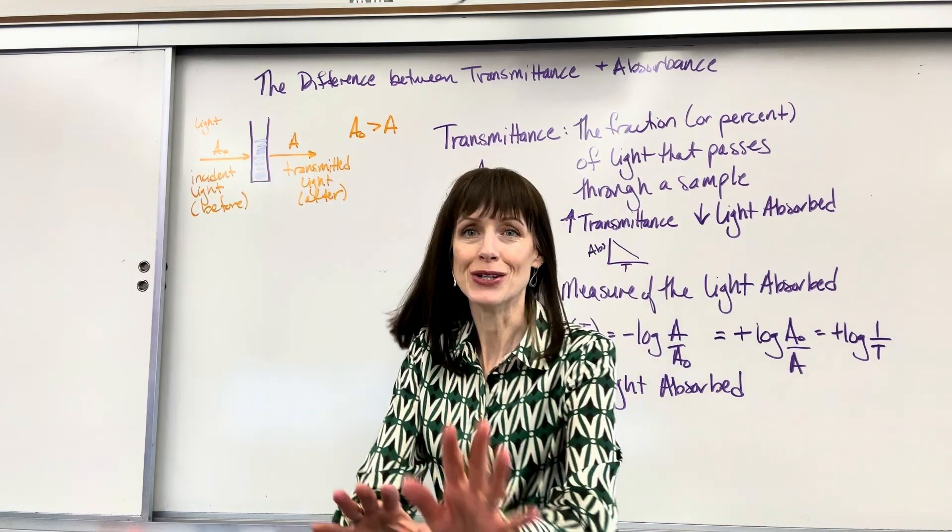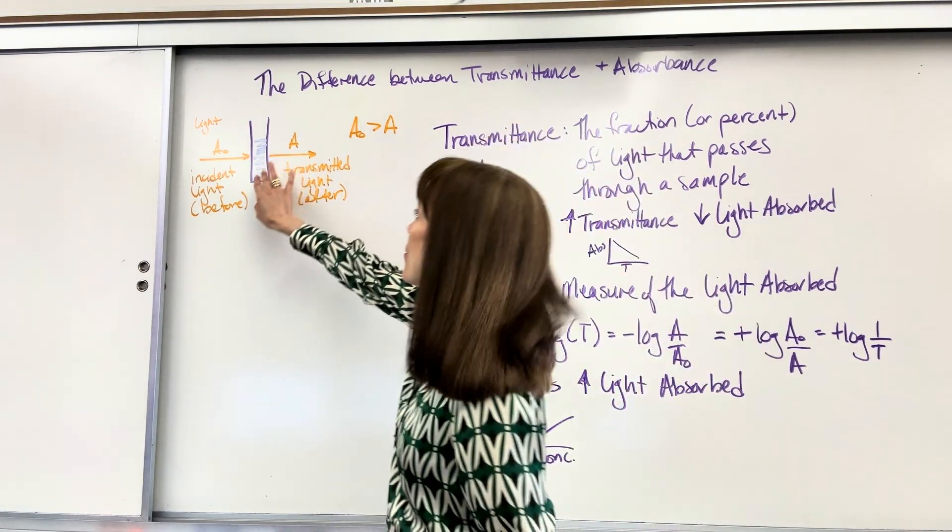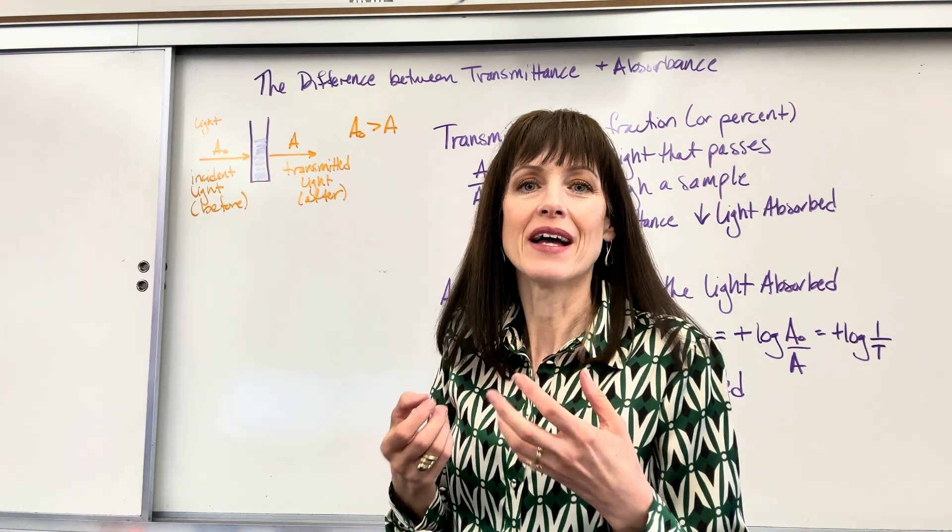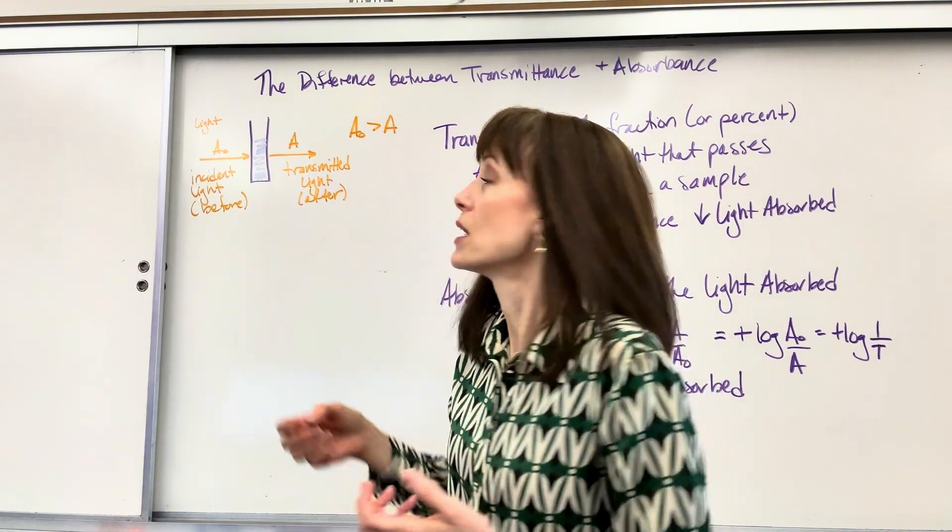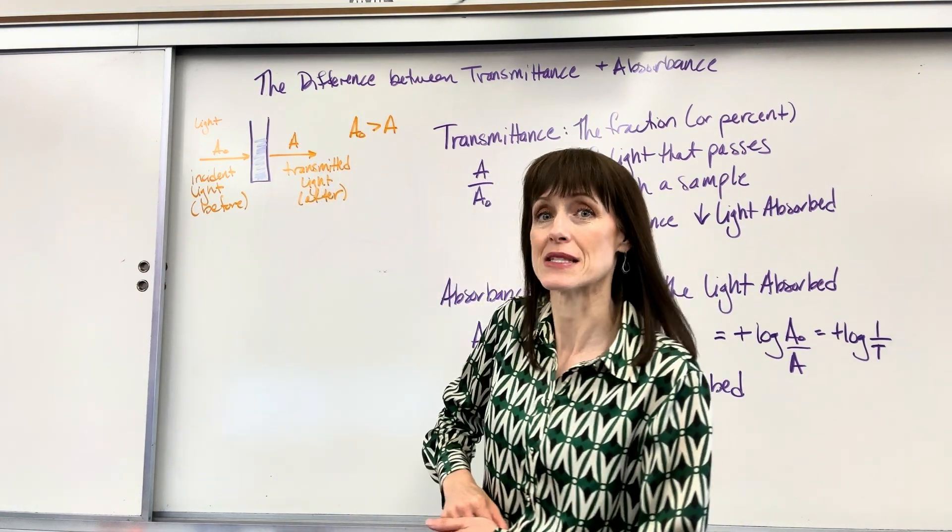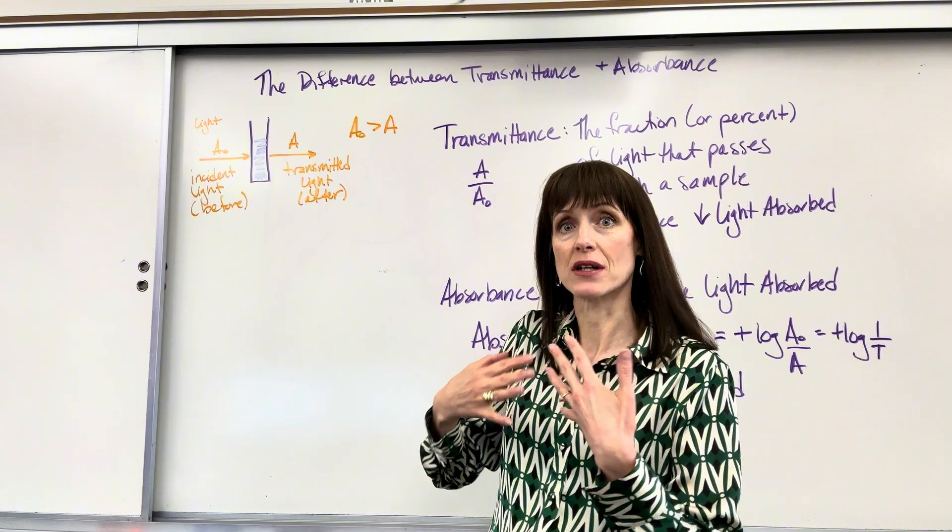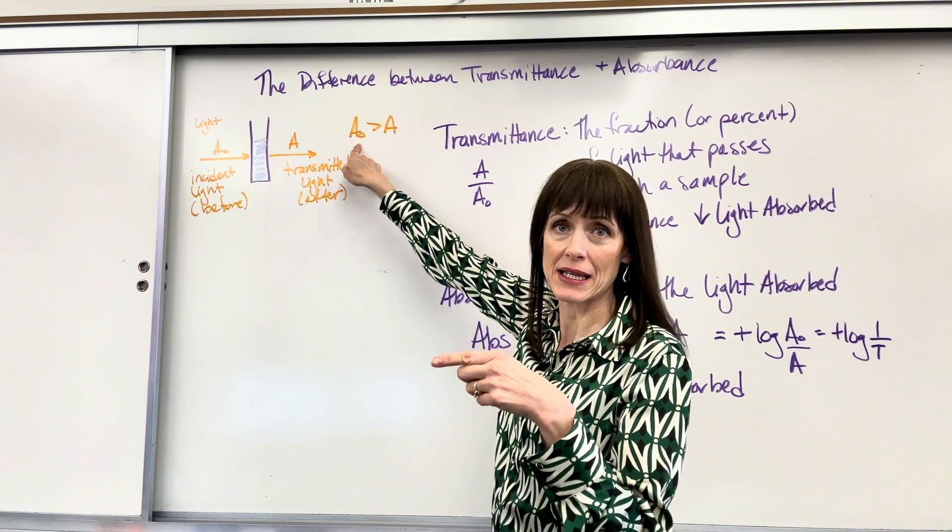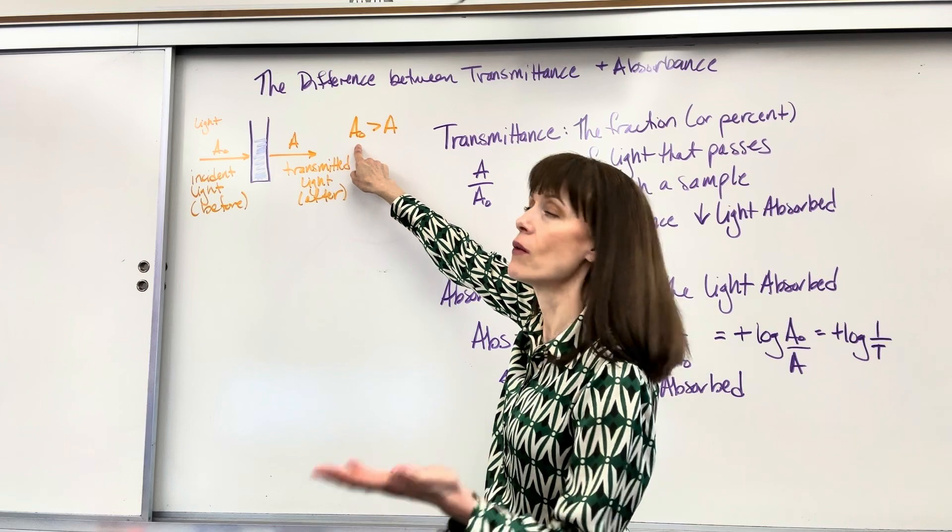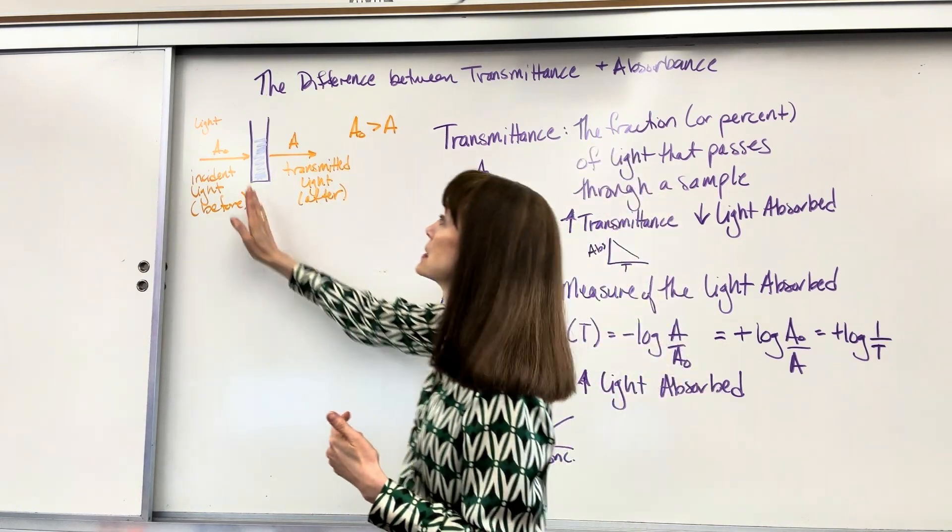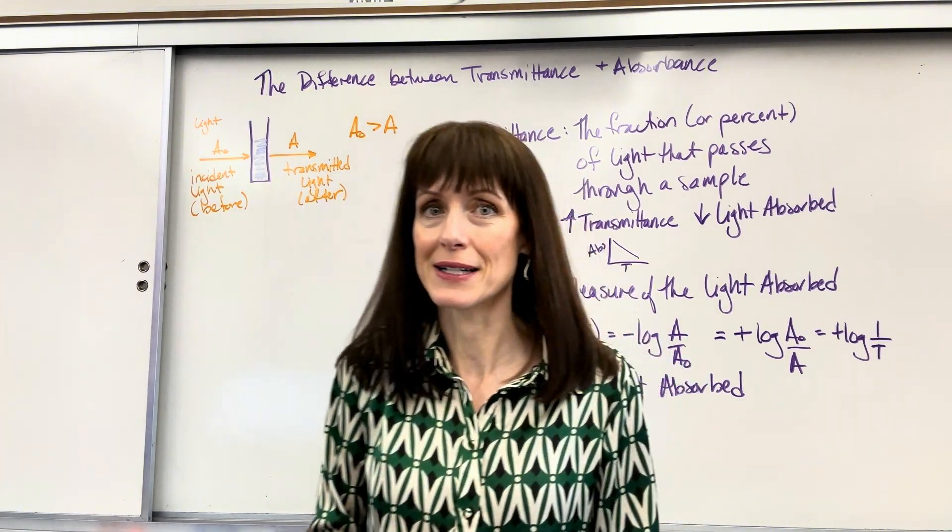The light goes through and you know what happens. Those compounds are going to absorb. The ions are going to absorb the light. So the light that comes out is less. It's less light. And that's called the transmitted light. The light after the light travels through the sample. So notice the light that we begin with, that incident light, is always going to be greater than the transmitted light because some of that energy was absorbed by the ions.